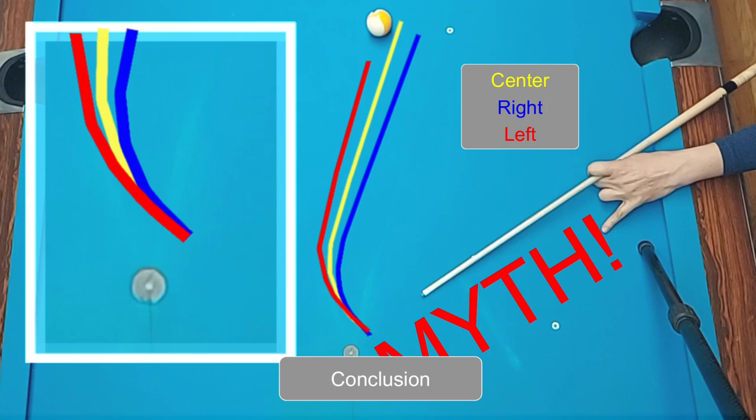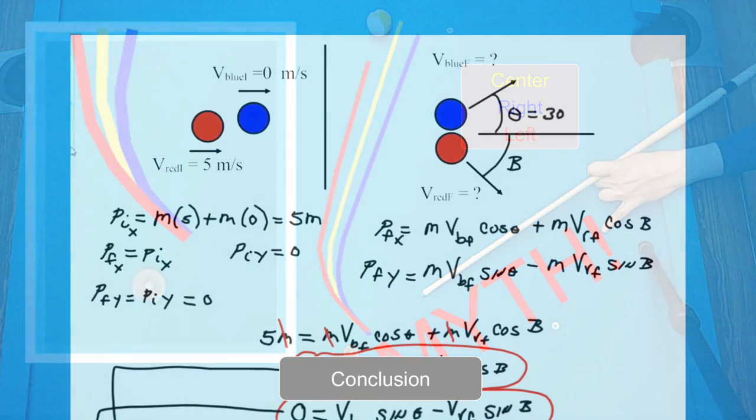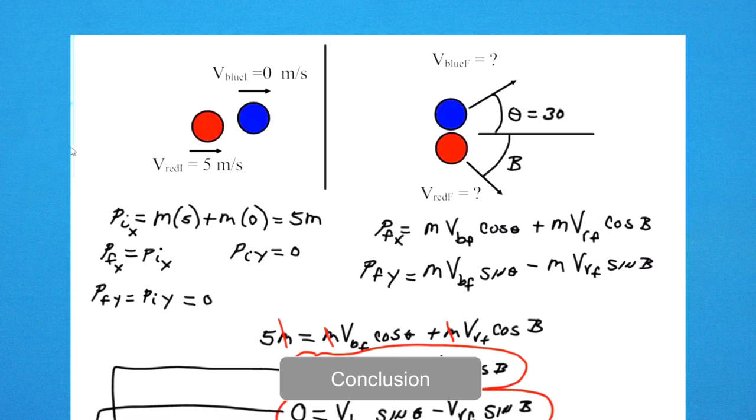For any of you who are still doubting my point about the tangent line, here is an example from a college-level physics course where they use advanced mathematics to determine the angles at which two pool balls will depart a collision. This is an example of an elastic collision, meaning the pool balls do not compress so there is no net loss of energy. It is also a glancing collision, meaning the red ball does not hit the blue ball full on.